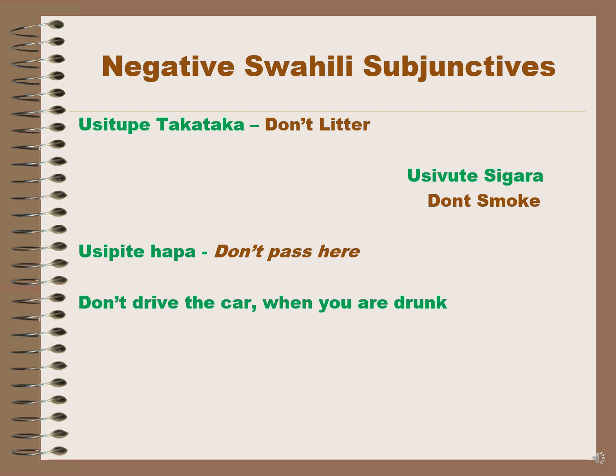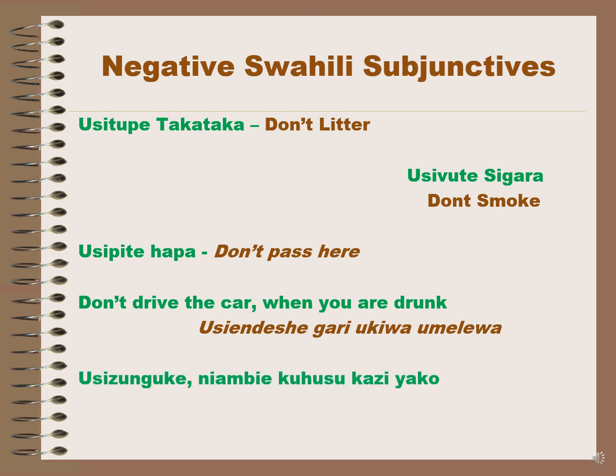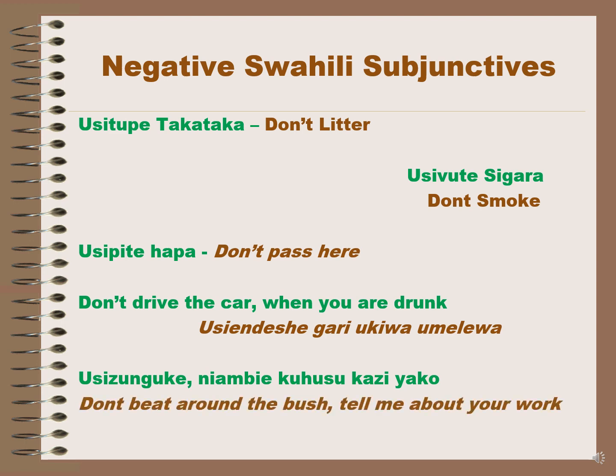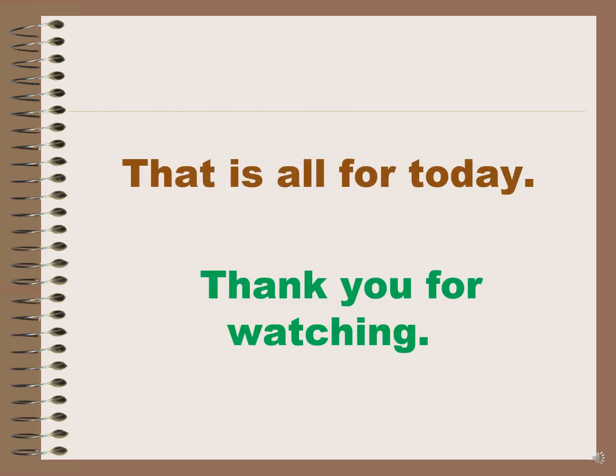Usiendishe gari ukiwa umelewa means 'don't drive the car when you are drunk'. Usizunguki nyambi kuhusu kazi yako means 'don't beat around the bush, tell me about your work'. Usizunguki in Swahili means 'don't beat around the bush' in English when used in such a sentence. That is all for today, thank you for watching.